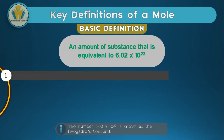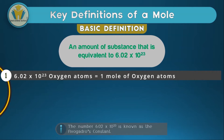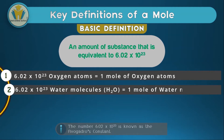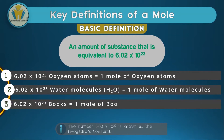For example, if we have 6.02 times 10 to the power 23 oxygen atoms, we can say that we have one mole of oxygen atoms. Again, if we were to get 6.02 times 10 to the power 23 water molecules, we can say we have one mole of water molecules. And if we stretch this a little, 6.02 times 10 to the power 23 books is equal to one mole of books. However, this third example is just quite imaginary — you might never be asked such a question because it's non-chemistry based.